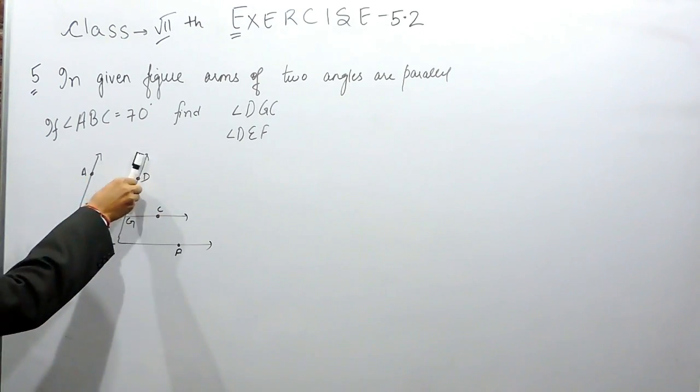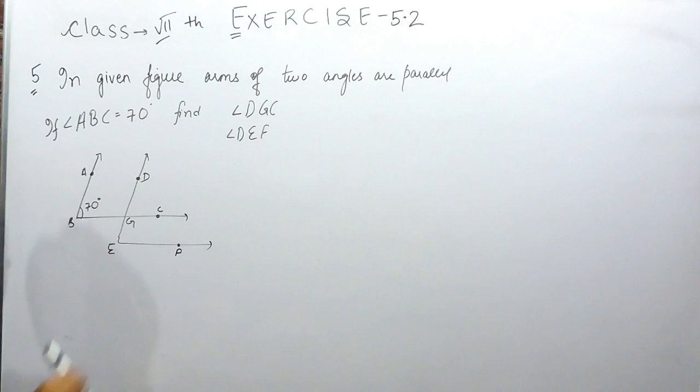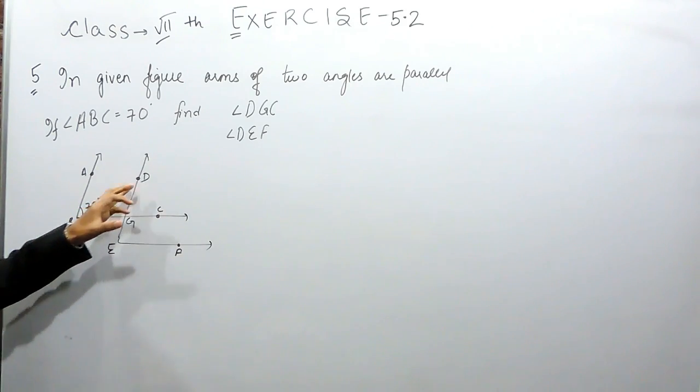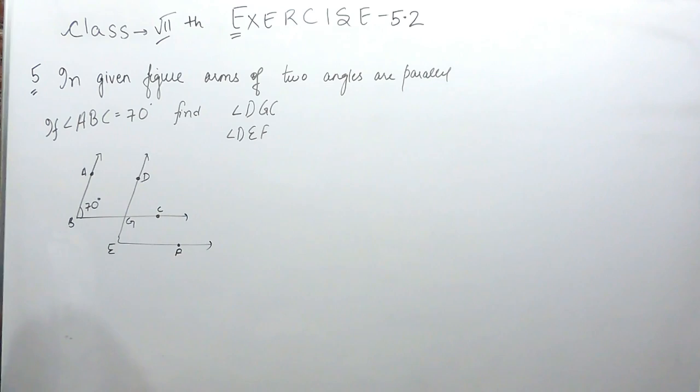Now you can see that these two are parallel lines. This is a transversal. So angle ABC and angle DGC will form corresponding angles.